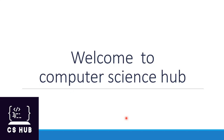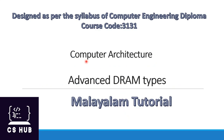Hello everyone, welcome to Computer Science Hub. This video is designed as per the syllabus of computer engineering diploma. The subject is Computer Architecture, course code 3131, and today's topic is Advanced DRAM Types. This will be the last topic in our first module. Let's start.